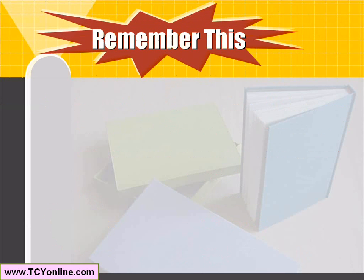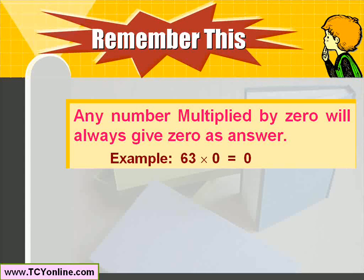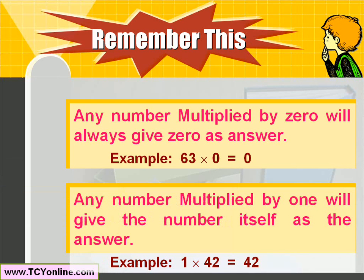Always remember that anything multiplied by 0 will always give 0. For example, 63 multiplied by 0 gives simply 0. Also, anything multiplied by 1 will give the number itself. For example, 1 multiplied by 42 will give 42.